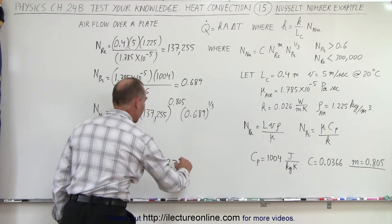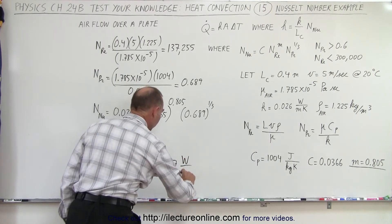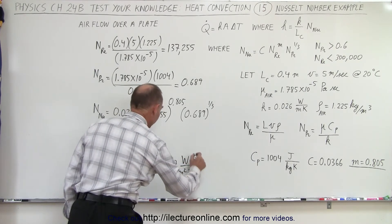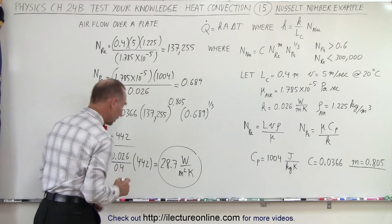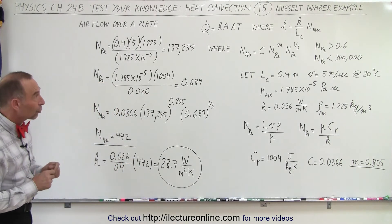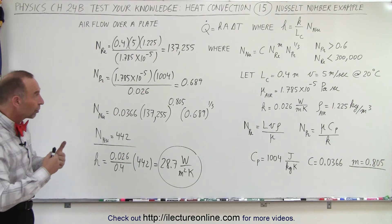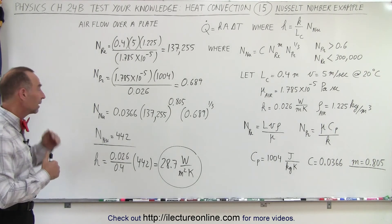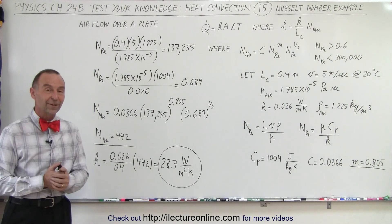28.7, and that would be in terms of watts per square meter times Kelvin. And that is how we're able to calculate the transfer coefficient for forced convection if we can calculate the Nusselt number. And that is how it's done.